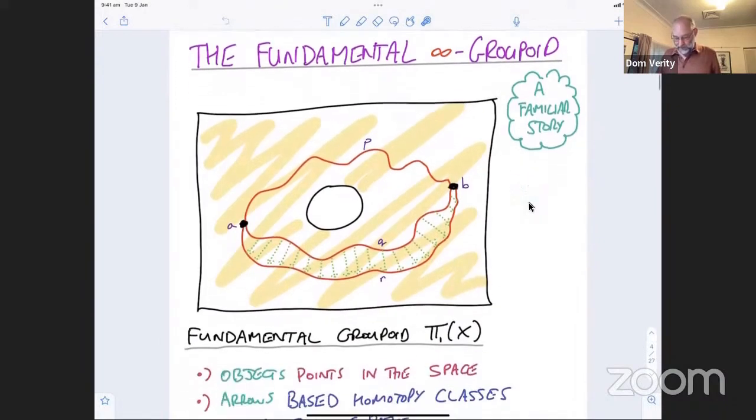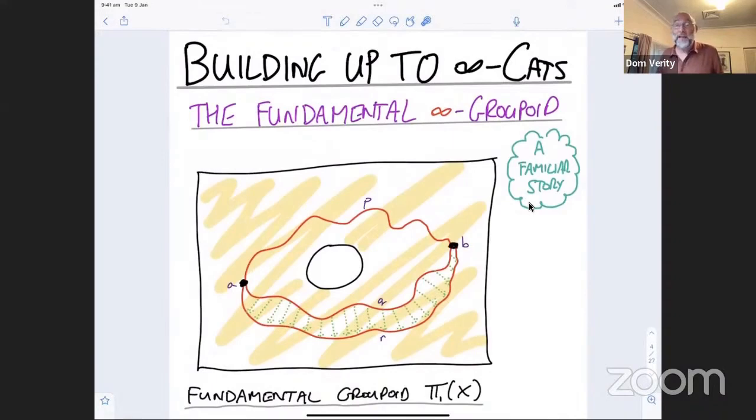One of the things that we do early on is we realize that there are various relationships that we have between paths. So we can certainly talk about equality of paths, are two paths literally equal. But it actually turns out that a much more useful relationship is to consider homotopy. So homotopy is a notion where we consider a not strict equality of paths, but where we consider perturbations or continuous transformations of one path into another. You might imagine that Q and R are related in this way.